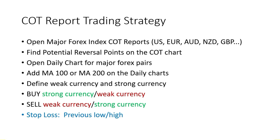The steps are simple. First, you open major forex index COT reports — for example, for US dollar, euro, Aussie dollar, kiwi dollar, British pound, etc. The COT reports are for indexes only, so it would be only for US dollar, only for euro, only for Aussie — there are no currency crosses. Then you will find the potential reversal points on the COT chart. You add 100 or 200 moving averages to the daily charts, define the weak and strong currency, and your goal is to buy strong currency against weak currency. For example, if euro is strong and dollar is weak, you buy euro dollar. The previous low or high will be the stop loss.